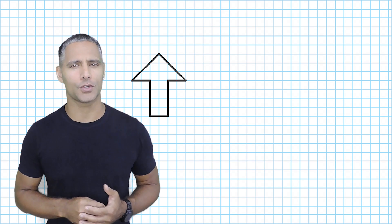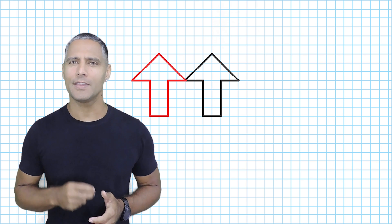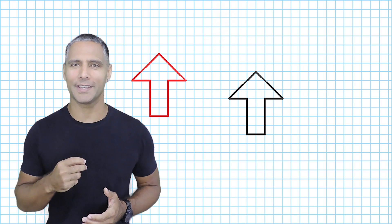The word transformation simply means that something is undergoing a change. Let's start by changing or transforming the arrow shown on the screen. The type of transformation shown is called a translation.